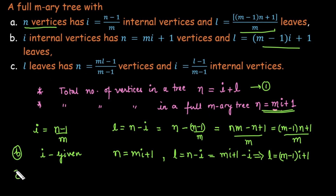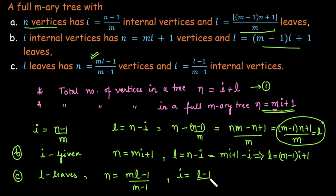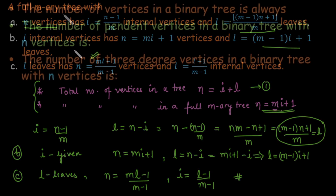For case 3, if the number of leaves l is given, we can find total vertices n = (m × l − 1) / (m − 1). And the internal vertices are (l − 1) / (m − 1). Just remember these two fundamental formulas; with them we can evaluate leaves, internal vertices, or total vertices if any one of them is given.